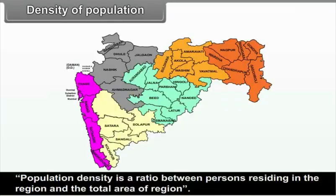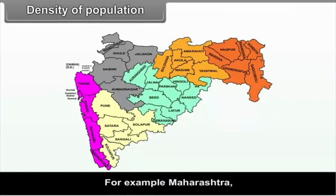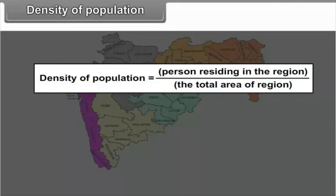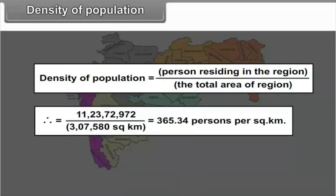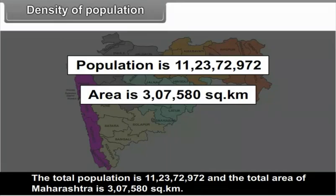7.1.1 Density of Population. Population density is a ratio between persons residing in a region and the total area of that region. For Maharashtra: density = 11 crore 23 lakh 72 thousand 972 persons divided by 3 lakh 7 thousand 580 square kilometers, which equals 365.34 persons per square kilometer.